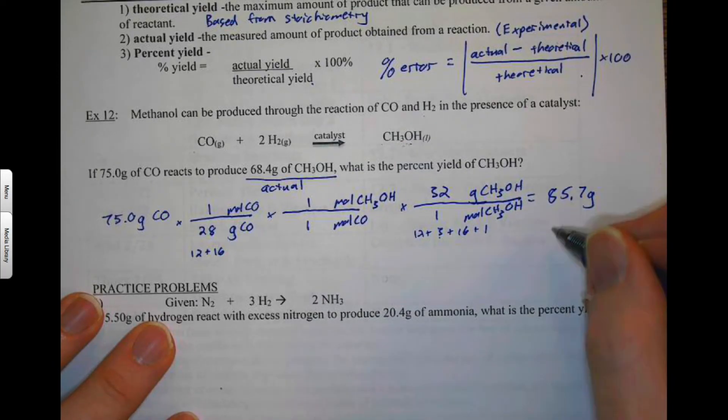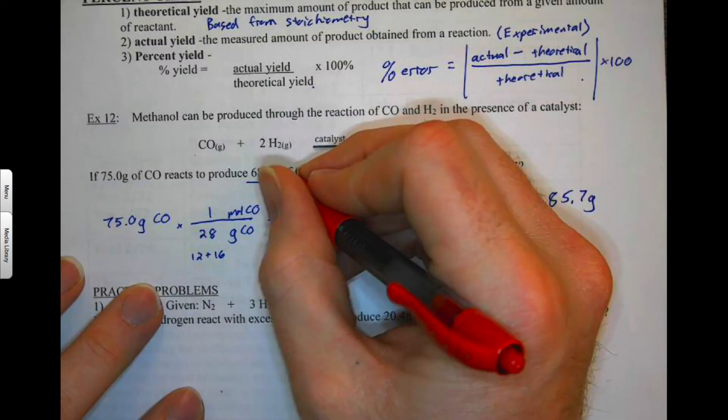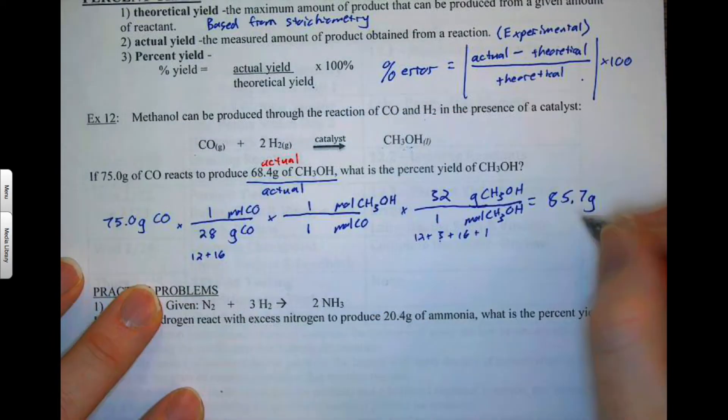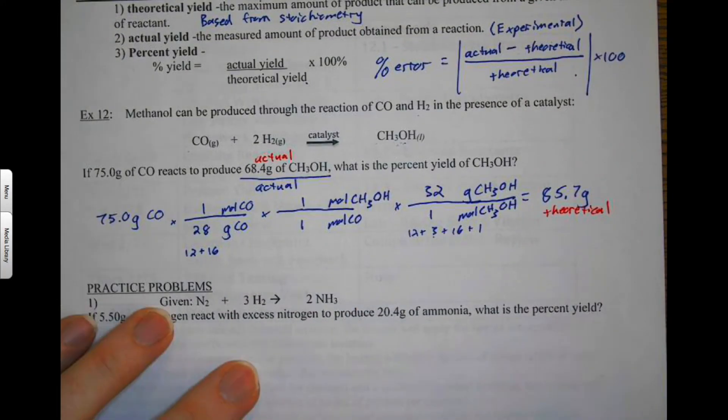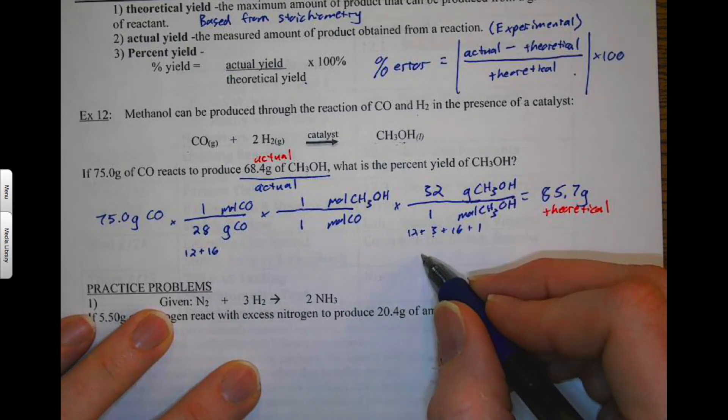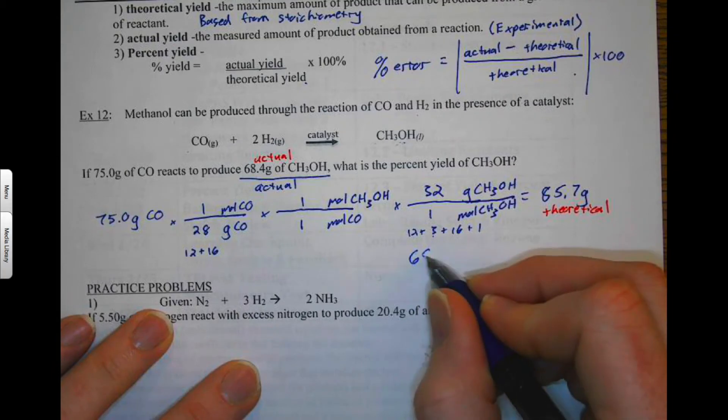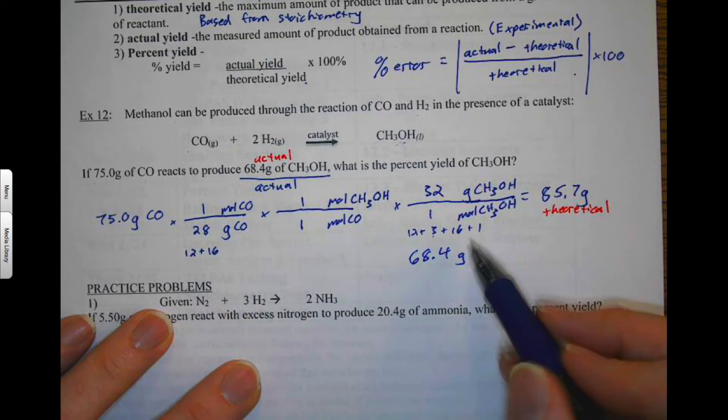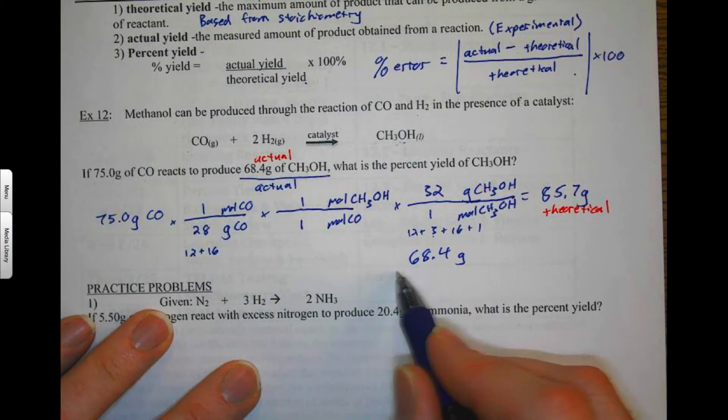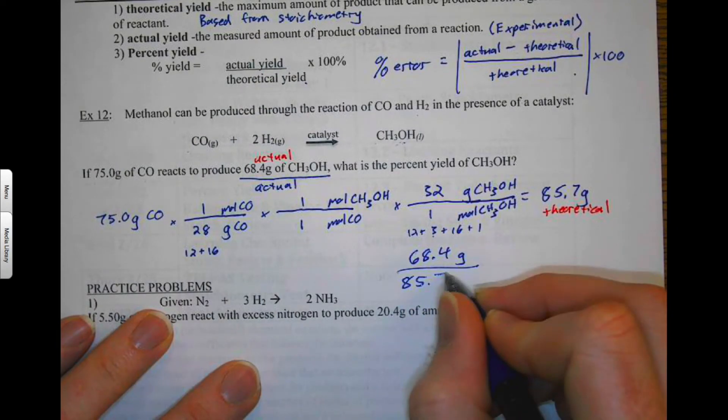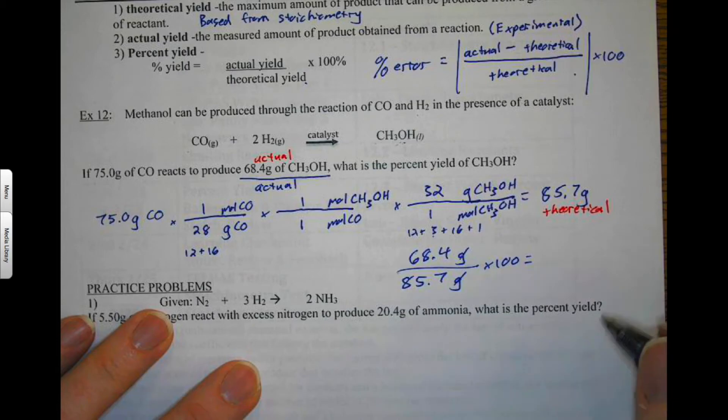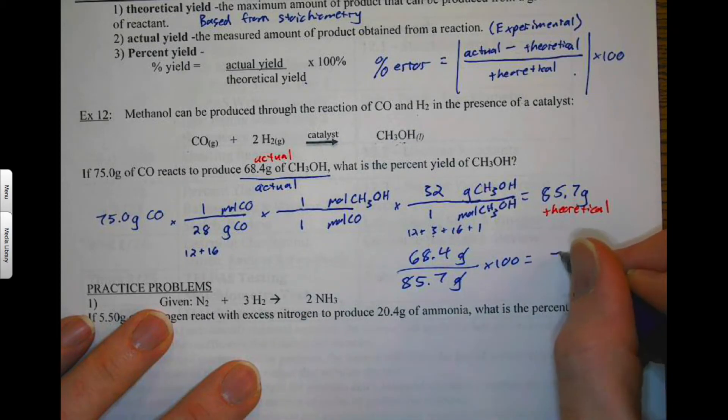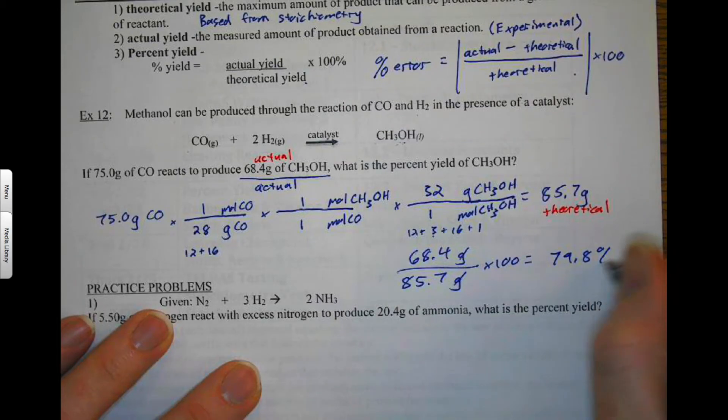So that would be a theoretical yield. So this is our actual, and this is our theoretical. If it went 100%, well, actually I'll talk about that in a second. So let's go ahead and do the percent calculation. Let's do 68.4 grams. That's our actual yield divided by our theoretical, 85.7 grams. So grams cancel out. Multiply by 100. And we'll find out that we get 79.8%. Okay.